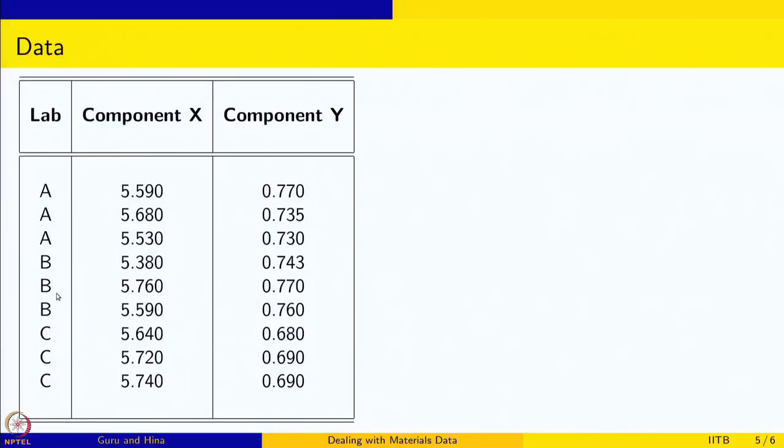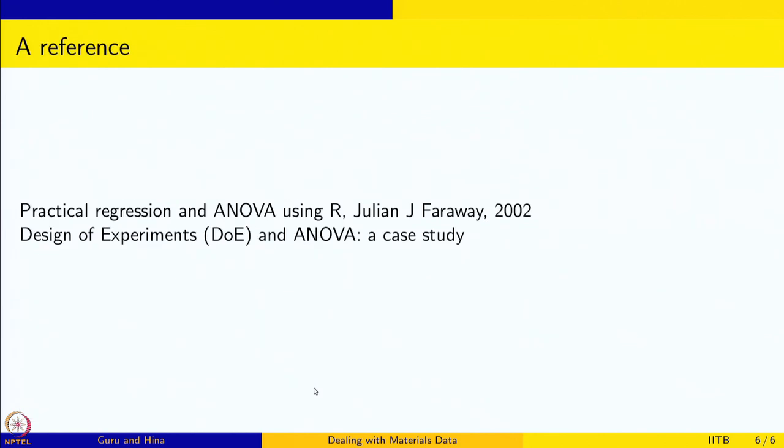So this is the data. The lab is A and then B and then C. In component X the measurements from A is here, here is B, and here is C. Similarly, component Y there are three measurements from A, three measurements from B, and three measurements from C. Let us take this data and try to do the analysis.